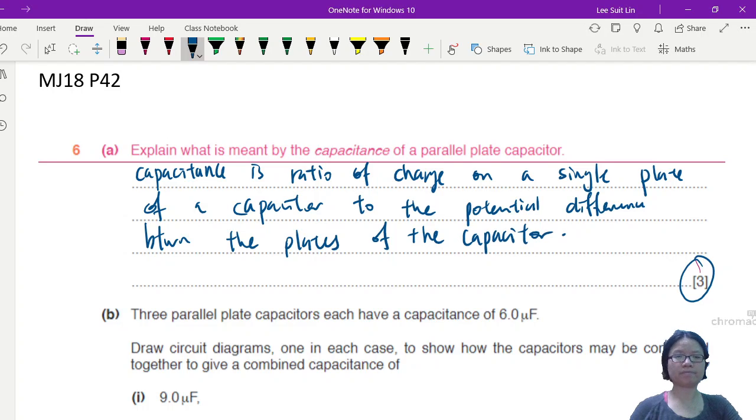Okay, so we kind of need that rolling first. Where are the marks? Ratio of charge to potential difference, one mark.